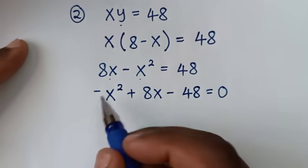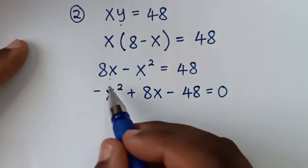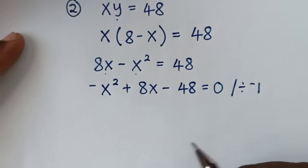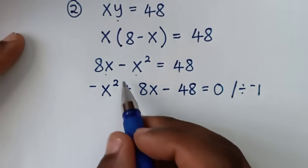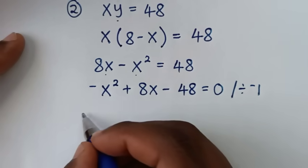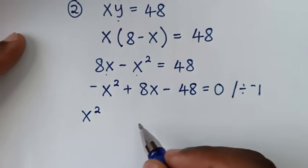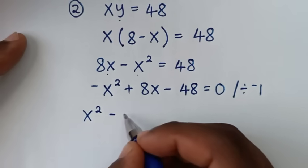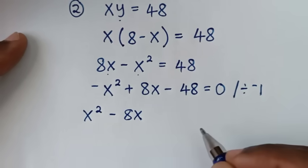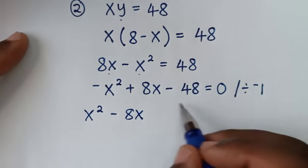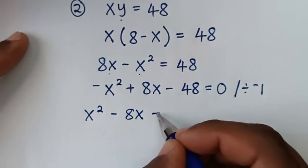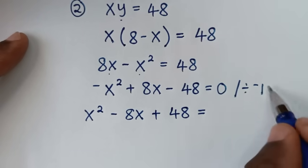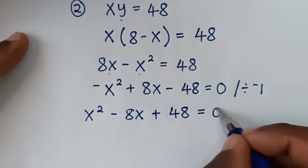Then from this equation here, we'll make this positive. So we'll divide the whole equation by negative 1. So negative x squared divided by negative 1 is positive x squared, 8x divided by negative 1 is minus 8x, minus 48 divided by negative 1 is positive 48, is equal to 0.